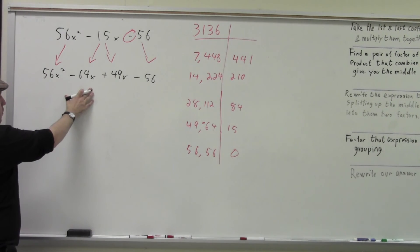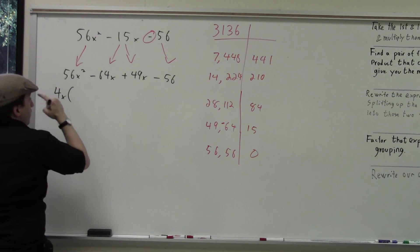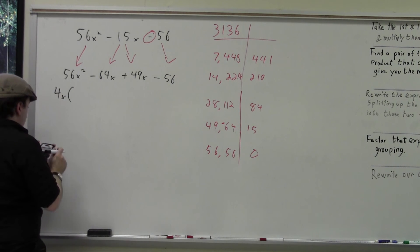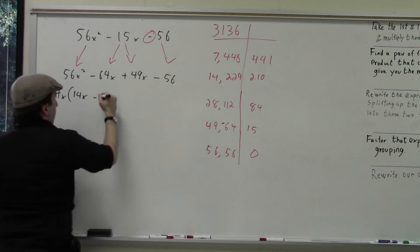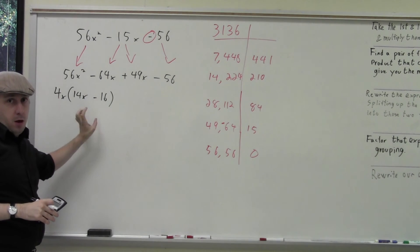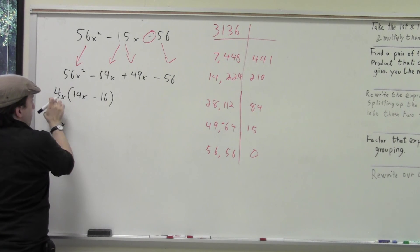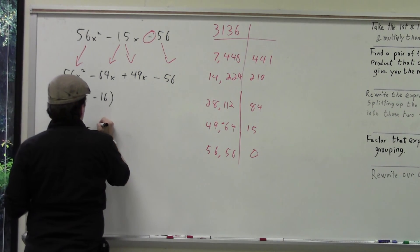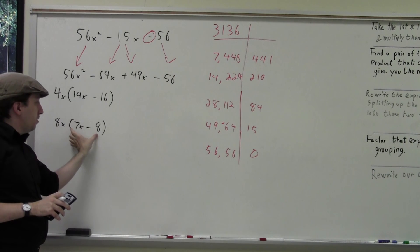Let's say I only see that both terms are divisible by 4. So I factor out 4x from the first group — 56 divided by 4x leaves me with 14x — and I factor out 4 from 64. But I notice both of these still have something in common, so I need to factor out another 2.